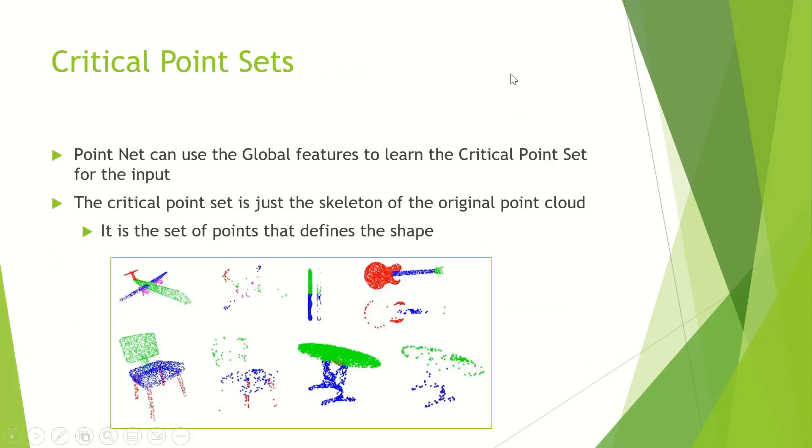One last thing about the PointNet architecture: it does more than just learn classification and segmentation. It also learns about the critical point sets. A critical point set is a skeleton of the original point cloud, and you take it from the global features. If you were to plot out the learned global features, you would get the learned critical point set. You can see in this picture of a chair, the critical point set is basically a skeleton of the chair. This shows that PointNet isn't just learning random things. It's learning the key features and the key underlying representations of these point clouds.